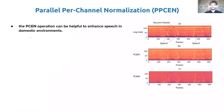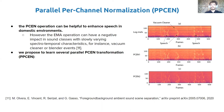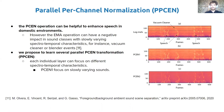The per-channel energy normalization operation has been designed to enhance speech in domestic environments. However, the exponential moving average operation can have a negative impact on some classes with slowly varying spectro-temporal characteristics, for instance vacuum cleaner or blender events. We propose to learn several parallel per-channel energy normalization transformations for sound event detection. Each layer can focus on different spectro-temporal characteristics, and thus different sound event classes. For example, in the figure, it can be seen that PCEN-1 focuses on slowly varying sound — in this case vacuum cleaner — while PCEN-2 focuses on speech, which is more fast-varying, and the vacuum cleaner is gaussianized.